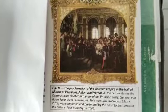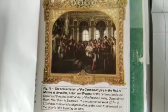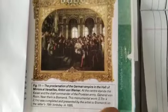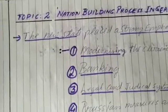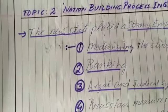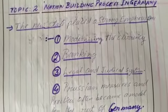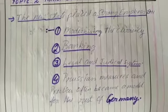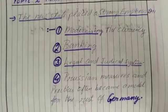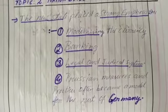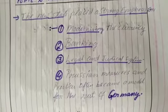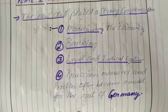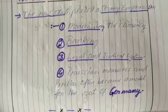Now let's find out about the nation building process in Germany after unification. The new state of Germany placed a strong emphasis on modernizing the currency, banking, legal and judicial systems. Prussian measures and practices often became a model for the rest of Germany.